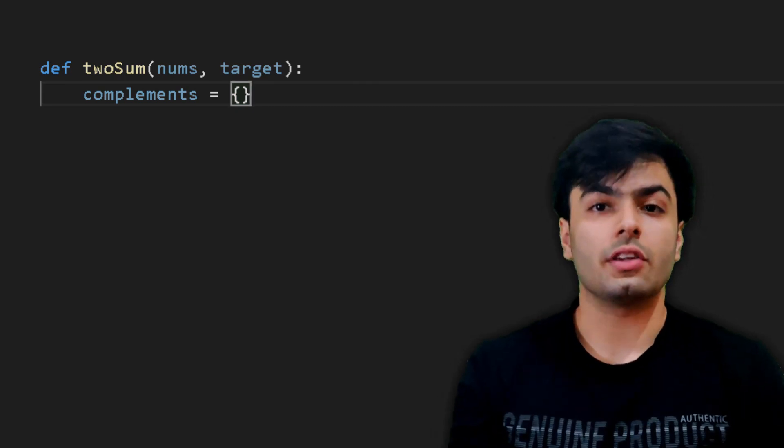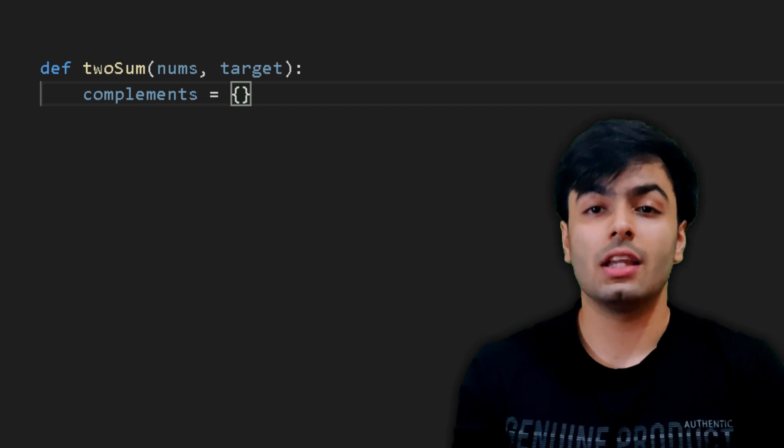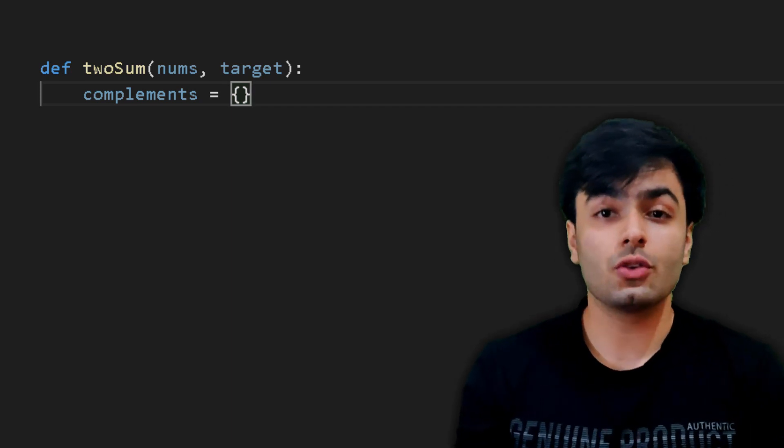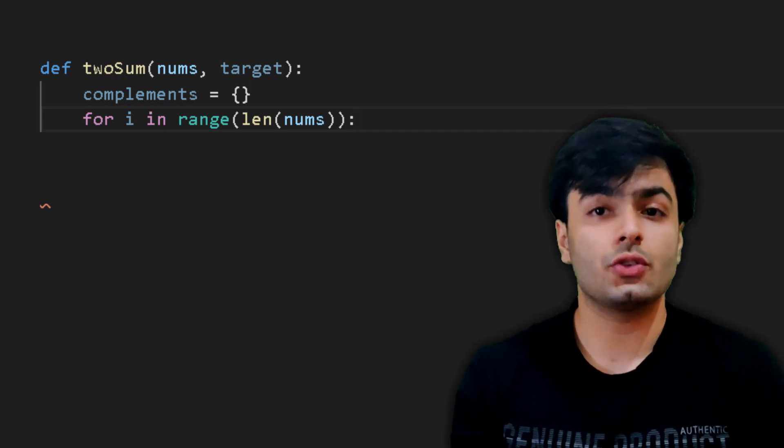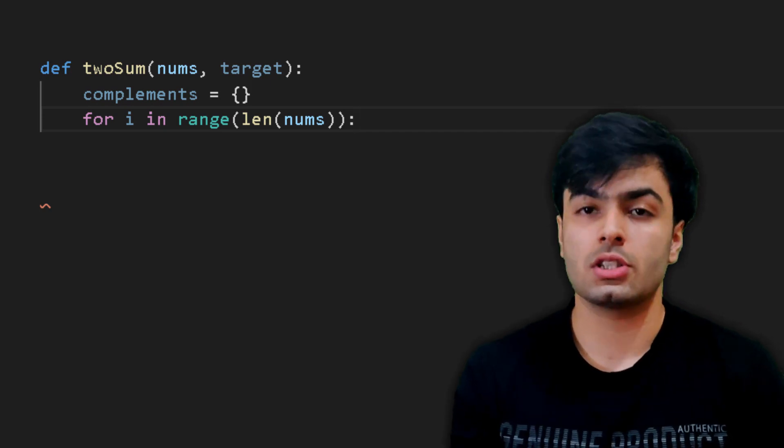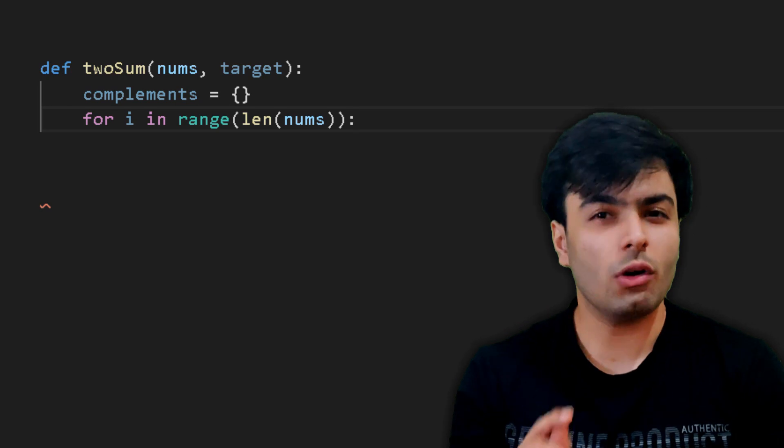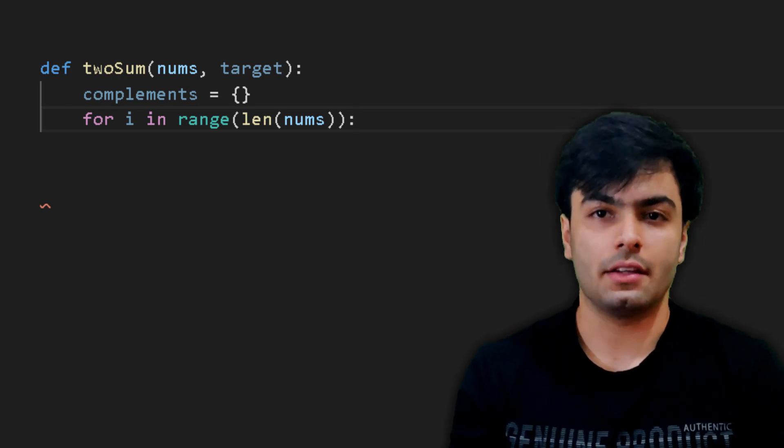Now, as we discussed earlier in the video, we need to loop through each element in the list of numbers. We can do this using a for loop, but since we need to keep track of the indices, let us use the range function, which will return numbers starting from 0 all the way to 1 less than the length of the list nums.